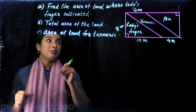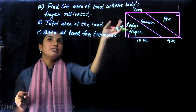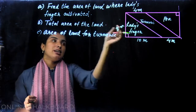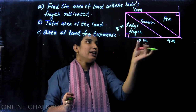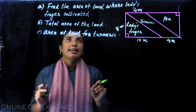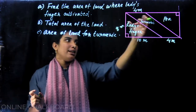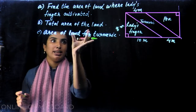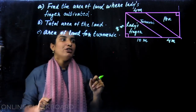So we will have one question. Our first step is to find the area of land where ladies finger is cultivated. Ladies finger is cultivated in this land. We can take the total area of the land, and we have to take the area of land for the other term.